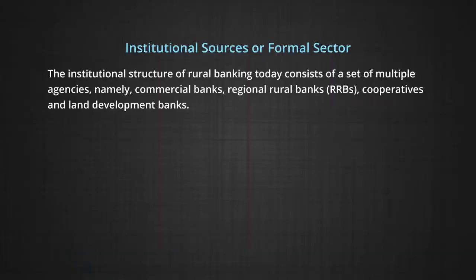The institutional sources or formal sector credit today consist of a set of multiple agencies, namely commercial banks, regional rural banks (RRBs), cooperatives, and land development banks. They are expected to dispense adequate credit at cheaper rates. Recently, self-help groups (SHGs) have emerged to fill the gap in the formal credit system.